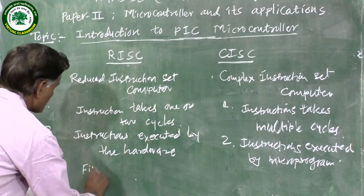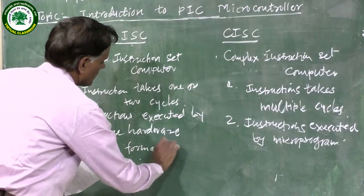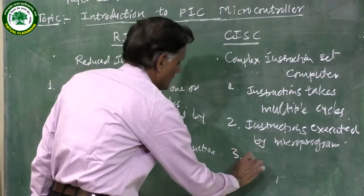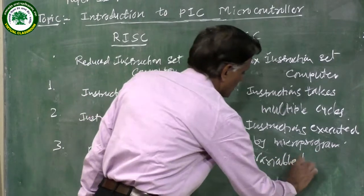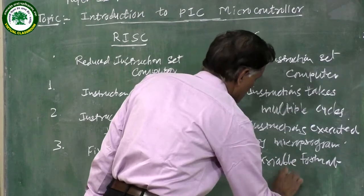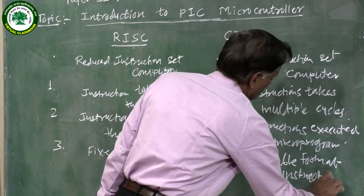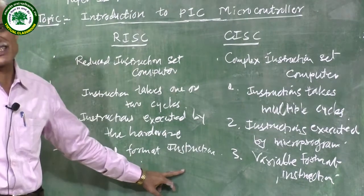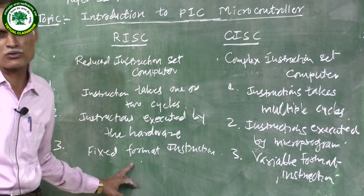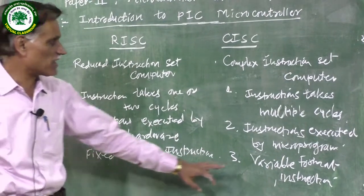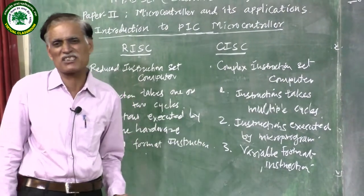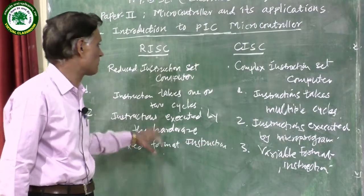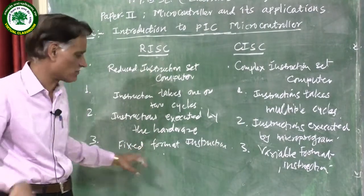The third important point is that in RISC architecture, instructions have a fixed format — instructions are only 2 or 4 bytes. In CISC architecture, variable format instructions are used — the instruction format may be single byte, 2 bytes, or 3 bytes. Therefore, variable instruction format is used in CISC, while fixed instruction format is used in RISC.